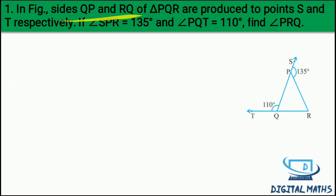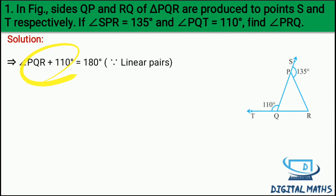Exercise 6.3 Question 1: In the figure, QP and RQ of triangle PQR are produced to points S and T respectively. Given: angle SPR = 135 degree and angle PQT = 110 degree, find angle PRQ. Pehle yeh dono angles dekho - yahan pe linear pair hai, yahan pe bhi linear pair. Angle PQR + angle PQT = 180 degree since linear pair. PQT = 110 diya hua hai, so angle PQR + 110 = 180 degree, therefore angle PQR = 70 degree. [Equation 1]